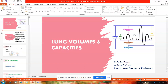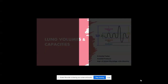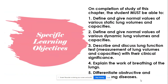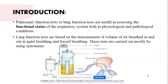Dear friends, we are back with a new video on the topic of lung volume and capacity, part of the respiratory system series. Our specific learning objectives are: to define and give normal values of various lung volumes and capacities — both static and dynamic — how to measure lung function tests with their clinical significance, what is work of breathing, and differentiation between obstructive and restrictive pulmonary diseases.